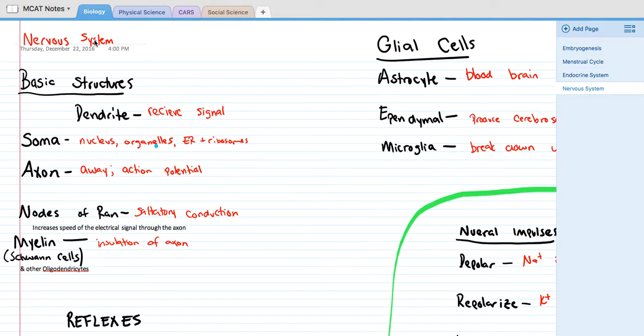All right, so this is going to start the nervous system. In the nervous system, you have three basic structures of neural cells. You've got the dendrites, which receive electrical signals. The soma of the cells, which contain the nucleus, organelles, endoplasmic reticulum, and ribosomes. And then the axon, which takes electrical signals away. A for away, A for axon. And this is where the action potential will travel.